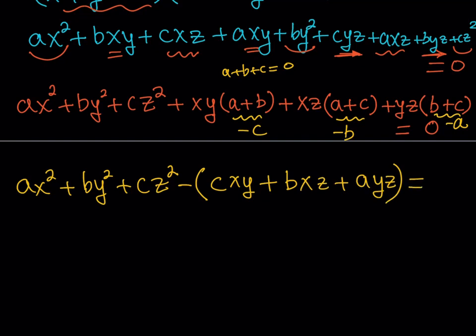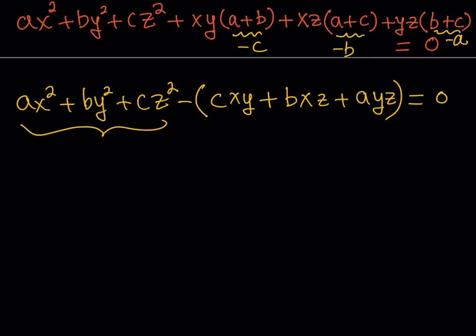And then I should be getting bxz and then ayz. Cool. And again, this is equal to zero. Which means that I can actually go ahead and isolate my expression, the one that I'm looking for. This is what I'm looking for, right? So why don't we just go ahead and isolate it on the left hand side so that we get a nicer expression. And that's basically what we're looking for, right?